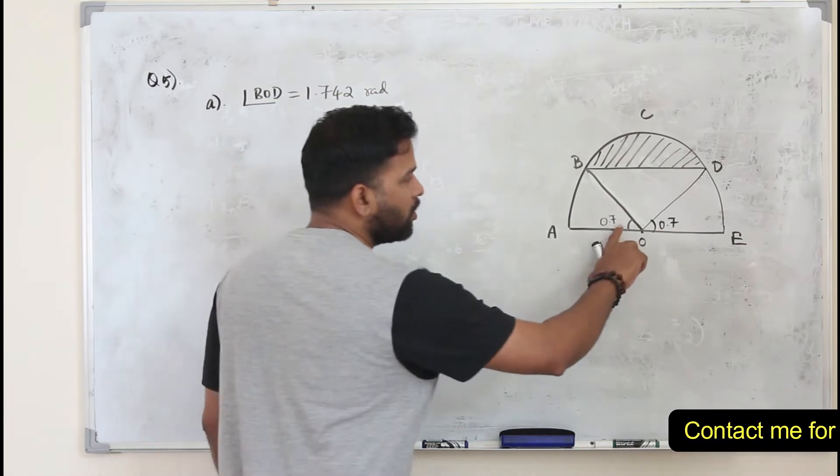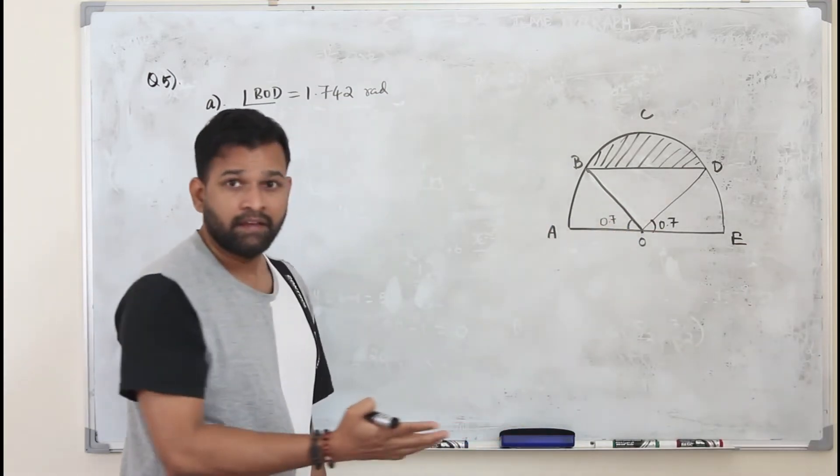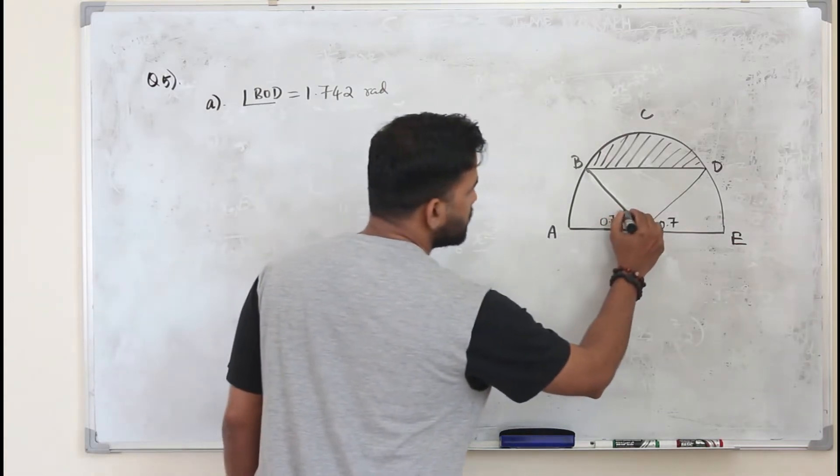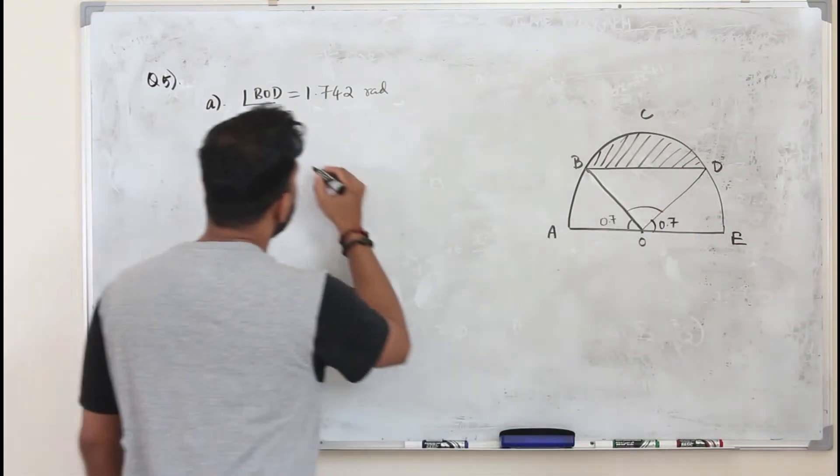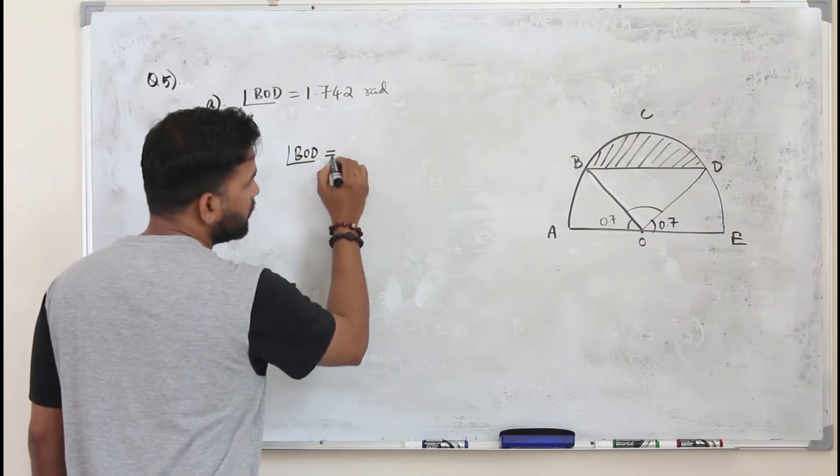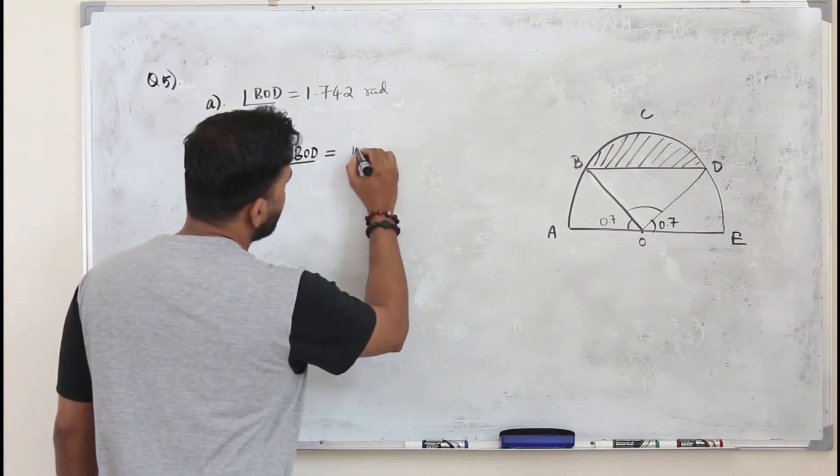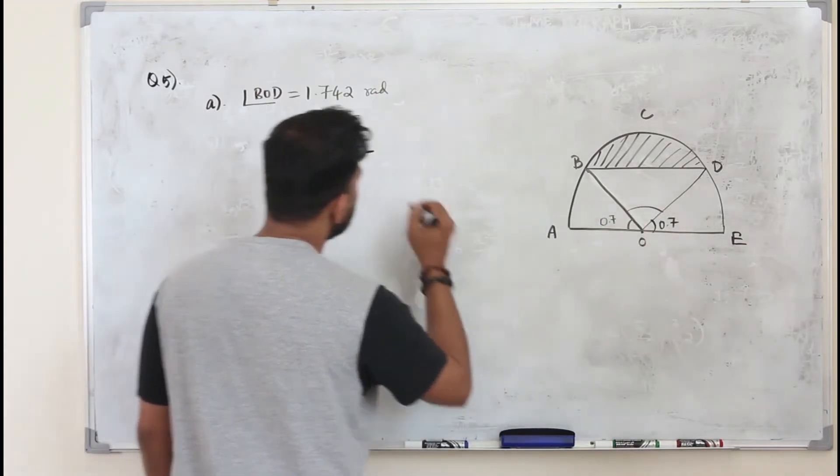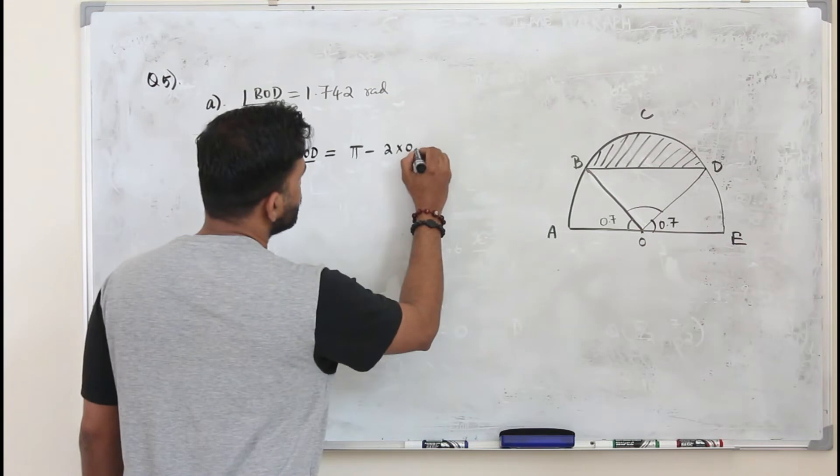And we know angle on a straight line is π radians or 180 degrees. So this angle will be angle BOD, which will be π, the total angle π minus this and this. So 2 times 0.7.